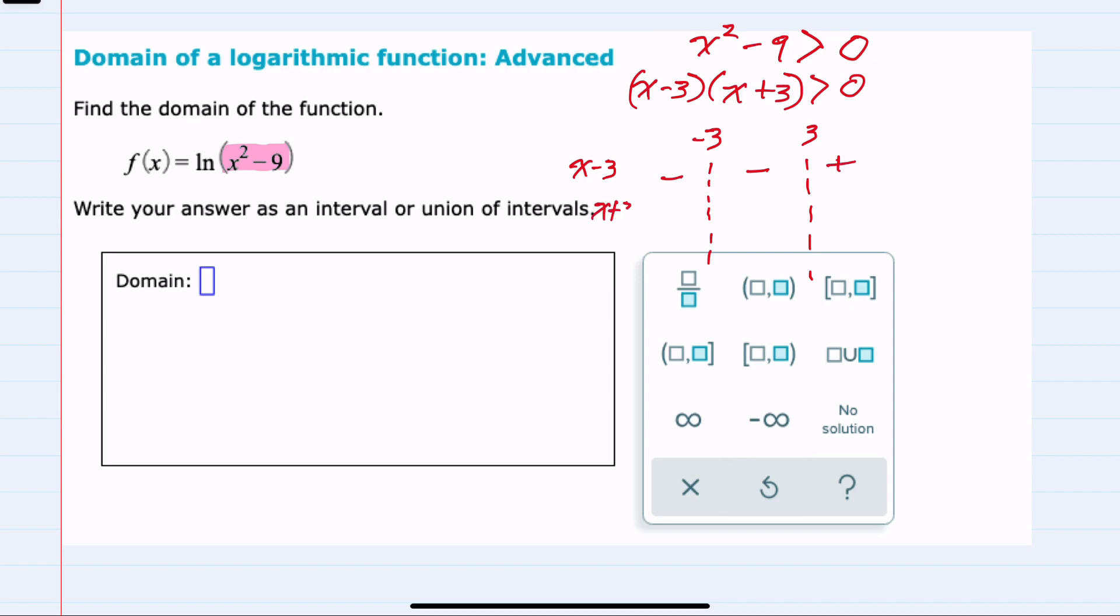Doing the same for x plus 3, anything less than negative 3 gives us a negative, anything greater than negative 3 gives us a positive. So the product of a negative and negative would be positive, a negative and positive, negative, and a positive and positive, positive.